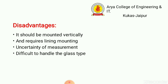Some disadvantages of Rotometers: it must be mounted vertically only; there are limitations regarding mounting alignment and uncertainty of measurements — this is the biggest disadvantage; and the glass tube is difficult to handle.